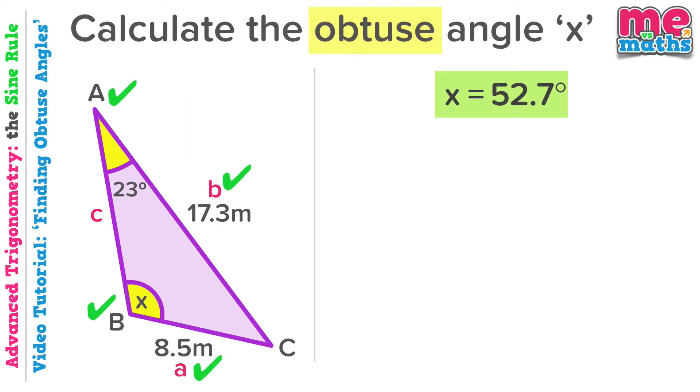Rewinding time a little. When we got our answer at 52.7, X is actually equal to 180 minus 52.7 giving our correct obtuse solution of 127.3 degrees.